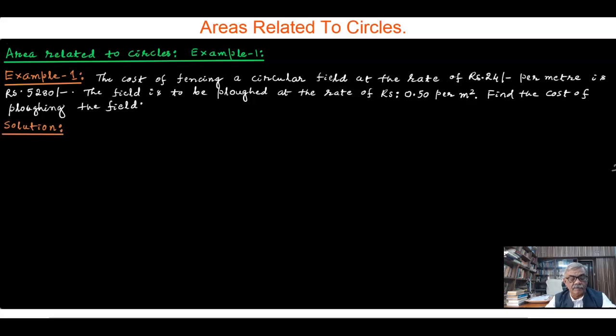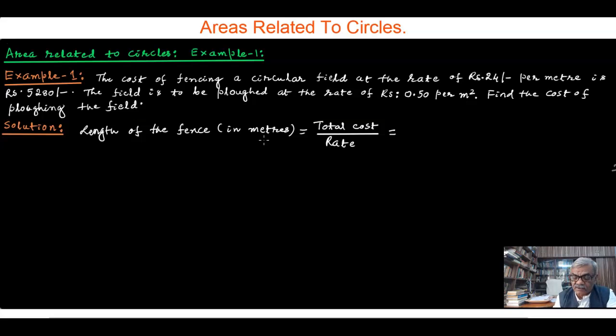Now the solution. The length of the fence in meters equals total cost divided by rate. The total cost is 5,280 rupees divided by the rate per meter of 24 rupees, which equals 220. This is the circumference of the circle.